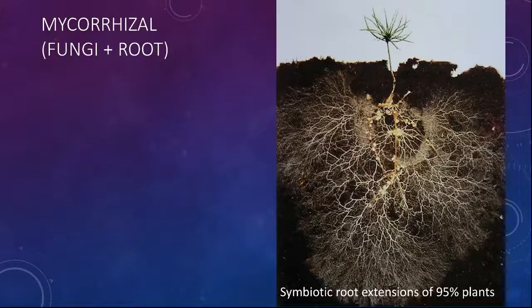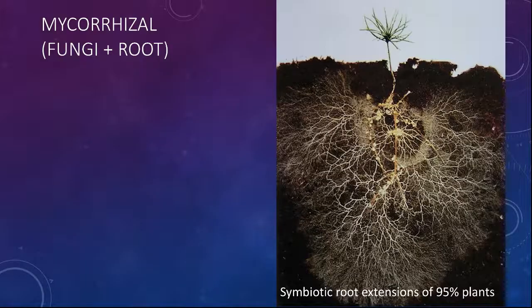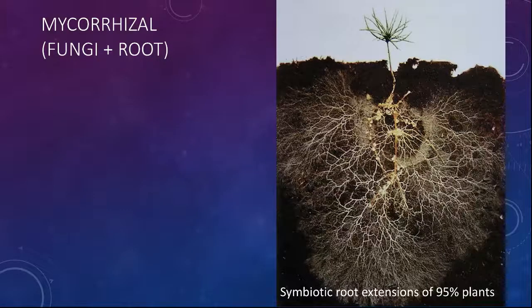These mycorrhizal fungi are symbiotic root extensions essentially of 95% of plants. See how they extend the absorption surface area of the plant. You can imagine how much more water and nutrients can be gained by these tiny threads of mycorrhizal fungi — thin cells that can access any nook and cranny in the soil.